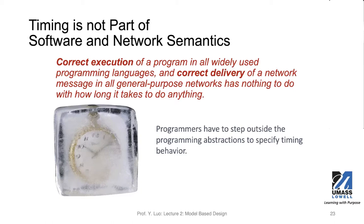As a result, when you don't concern about time, the program will produce expected deterministic results. But when timing comes into play — for example, when you have multiple threads or multiple programs running and they share variables, and when you send messages over a network that has delays and gets things out of order — your results are oftentimes non-deterministic. This case is very common, and you have to step outside the programming abstraction to specify timing behavior.